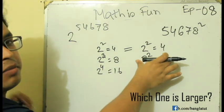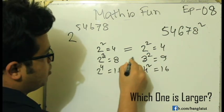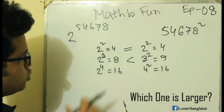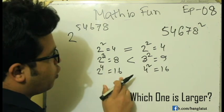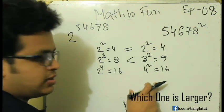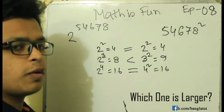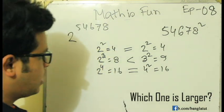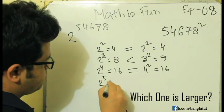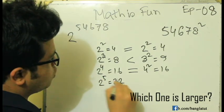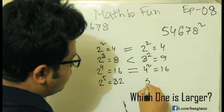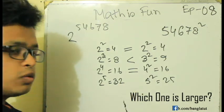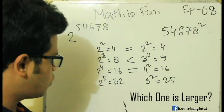We can see that 3 squared equal to 9 is greater. We can see 2 squared equal to 4. That is reasonable at number 1. We can see that 2 to the power 5 equals 32, and 5 squared equals 25. So 2 to the power 5, which is 32, is greater than 5 squared, which is 25.